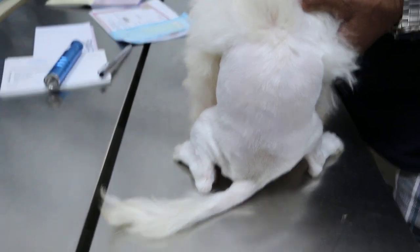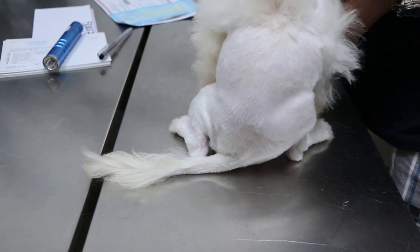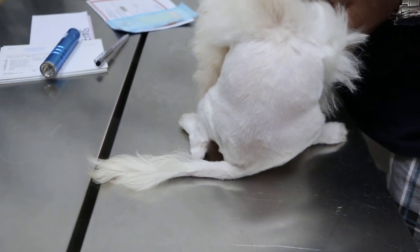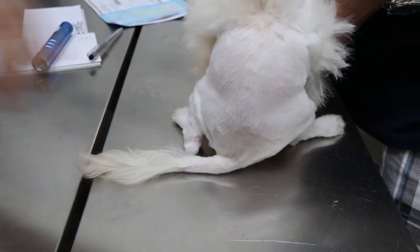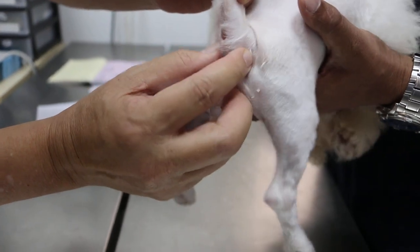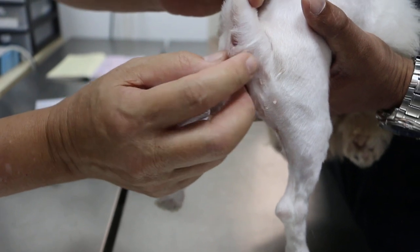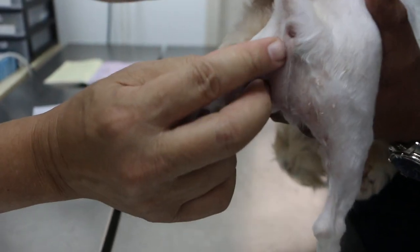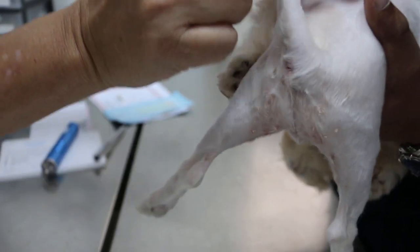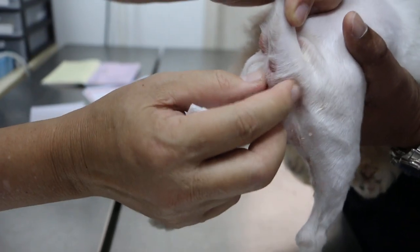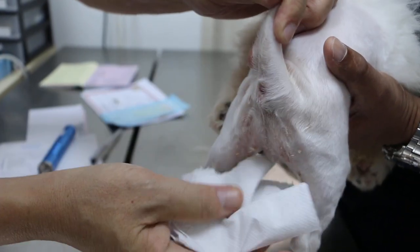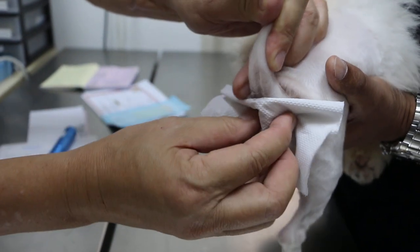Now, let me check the anal glands. There are two anal glands here, the oil glands, on the right and left below the anus. They produce oil, and the oil comes out in the stool to identify the dog's marking. The oil should be light yellow.